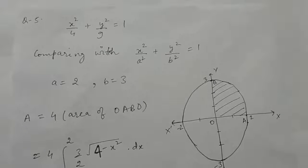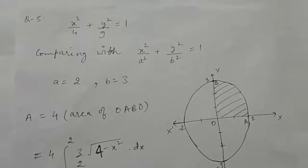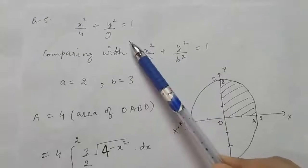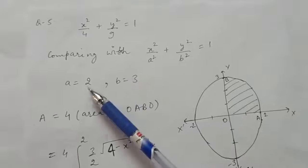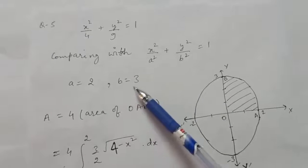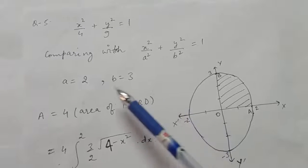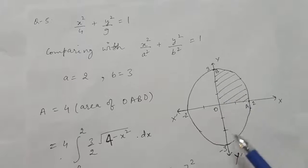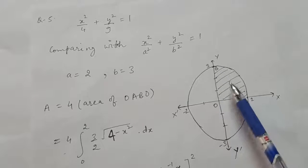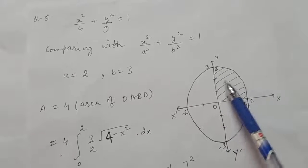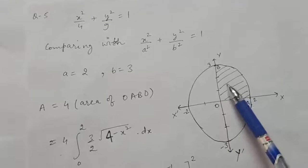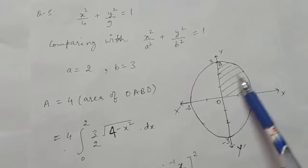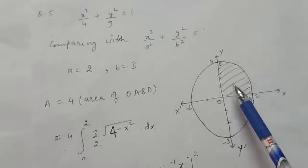Question 5: find the area of the region bounded by the ellipse x²/4 + y²/9 = 1. To draw the graph, compare with the standard equation of the ellipse. You get a = 2 and b = 3. The ellipse cuts the x-axis at −2 and 2, and the y-axis at 3 and −3. Since the ellipse is symmetrical about both axes, we find the area of the shaded region in one quadrant and multiply by 4.